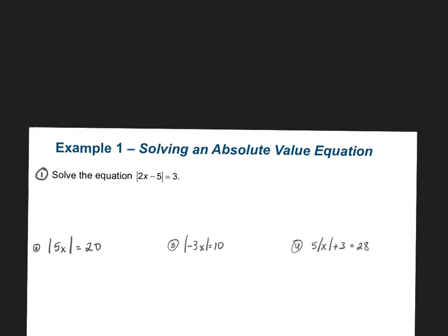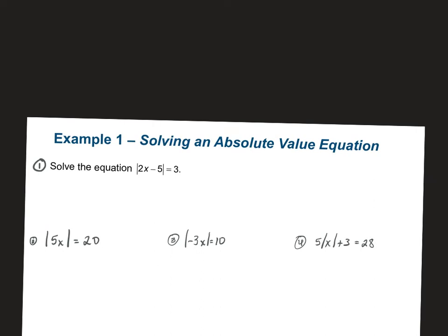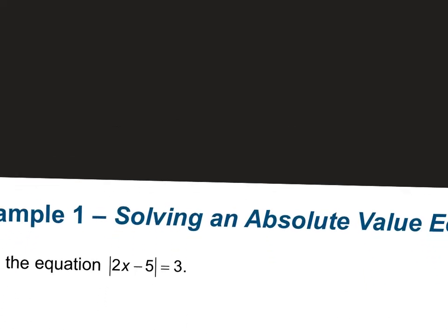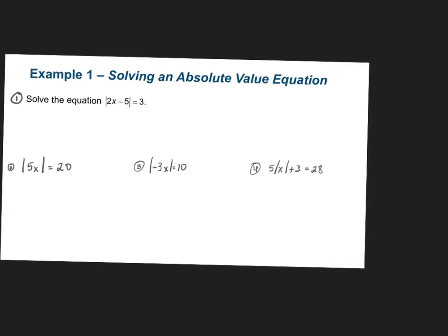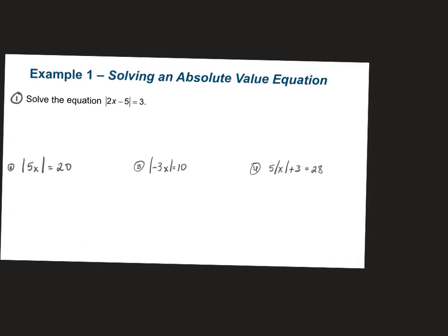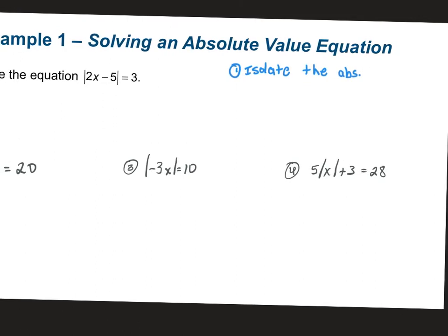I need you to write down a couple steps. This is how we solve. The first thing we're going to do is isolate — which means separate — the absolute value. You want the absolute value all by itself, just like we did with the radical. The second thing you're going to do is form, or write, two equations.